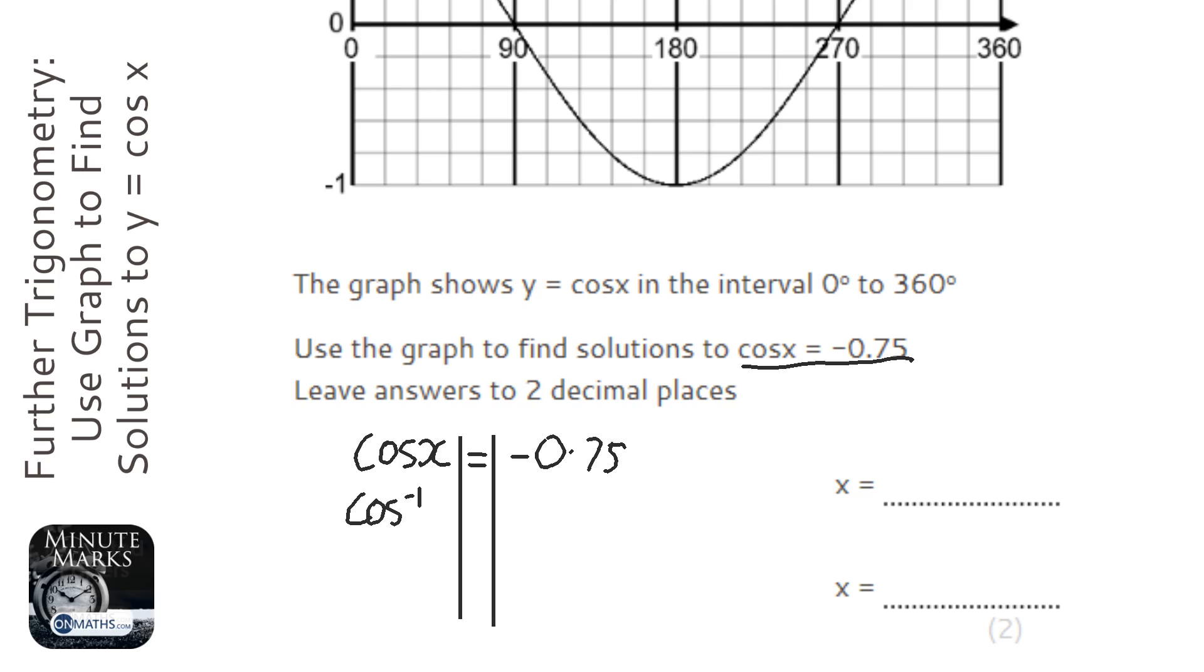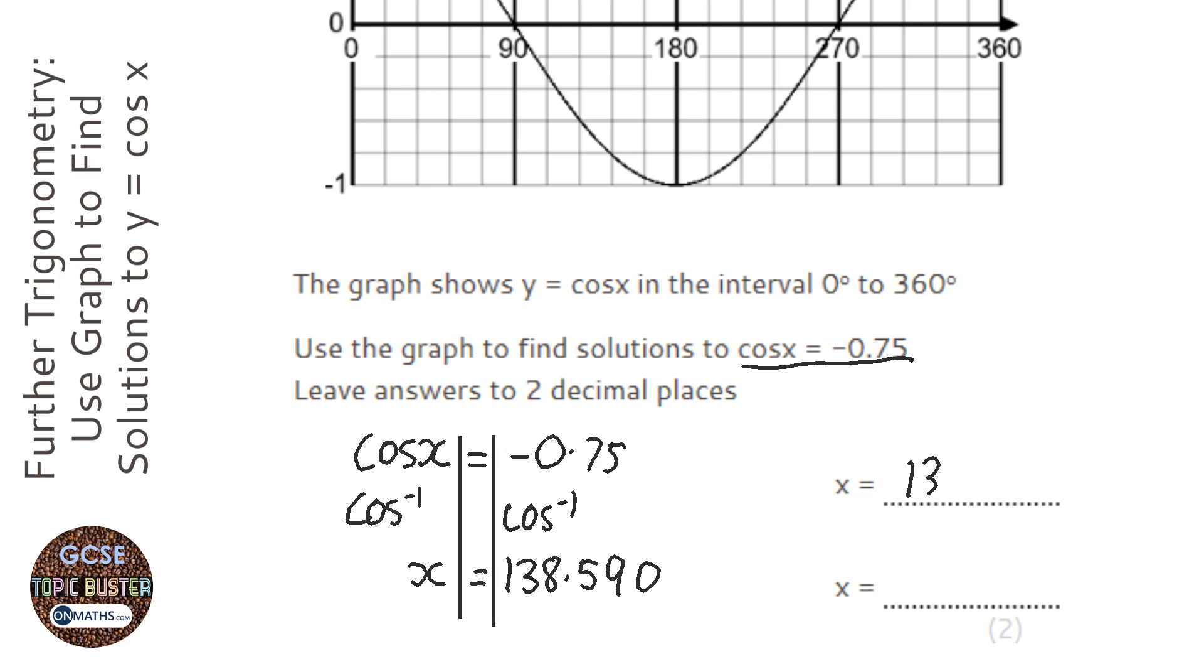Inverse cos both sides, and get my calculator. I'm going to inverse cos minus 0.75. And I get 138.590, and you might think, oh okay, it's two decimal places, 138.59, job's good.